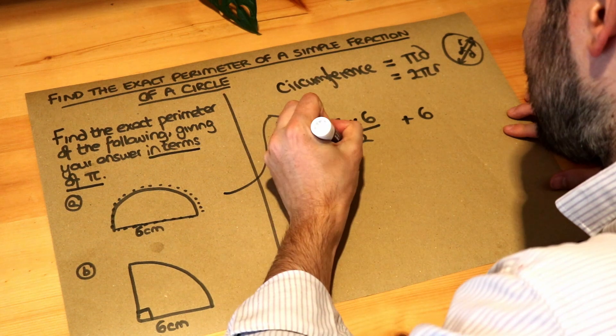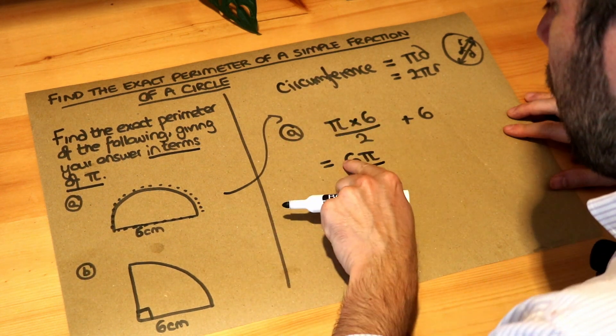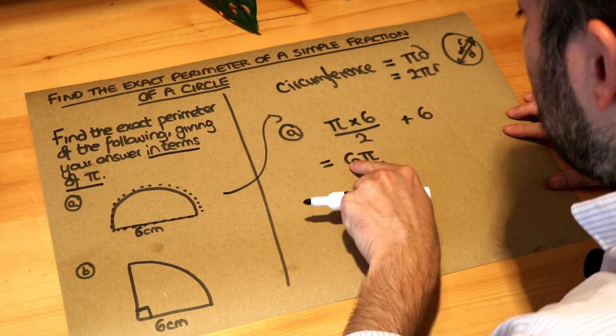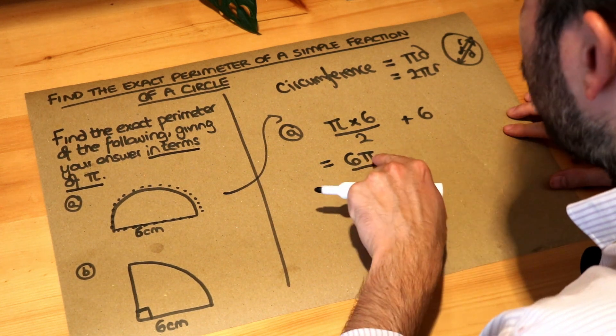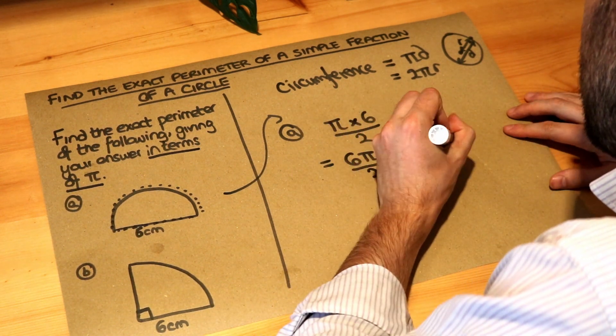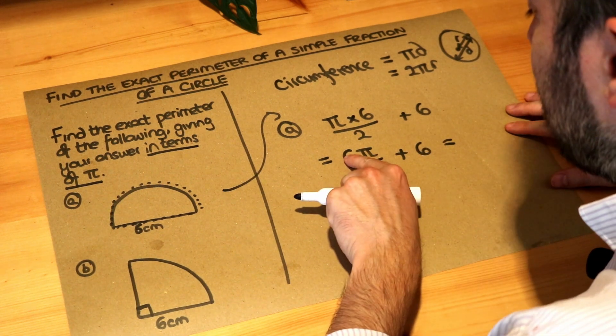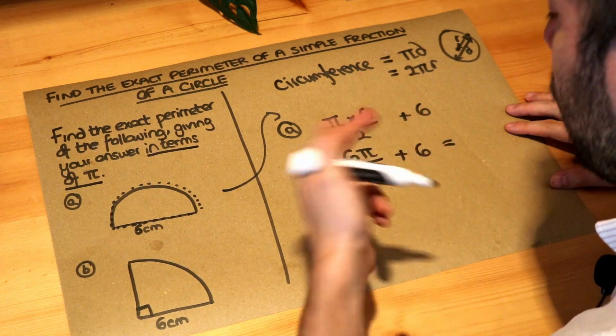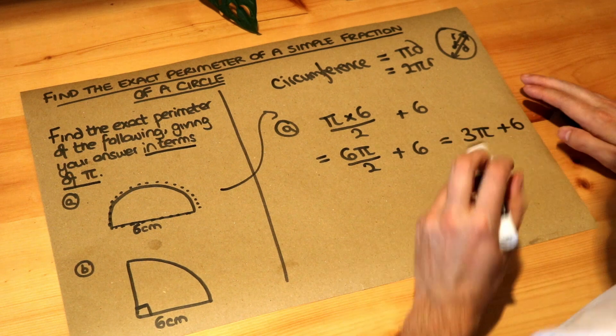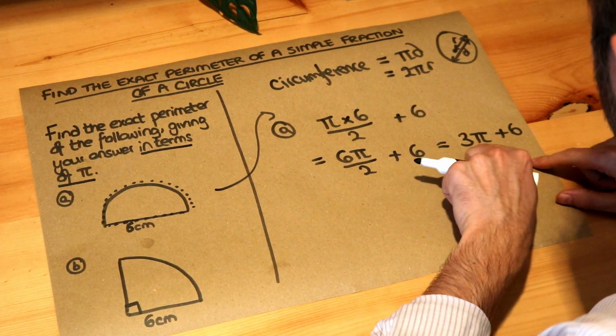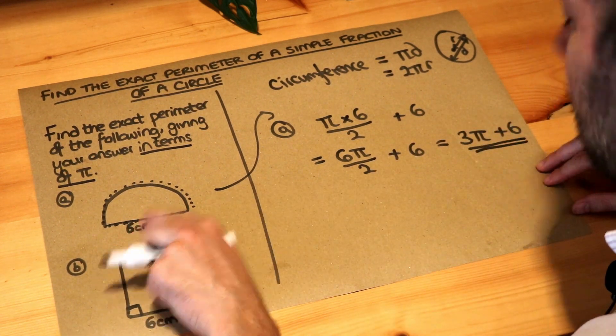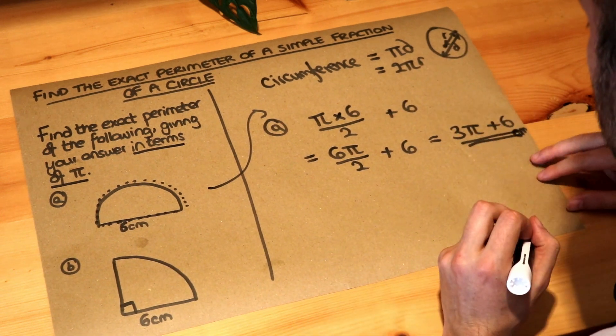So let's just simplify that now. Well, pi times 6, we write as 6 pi. Remember, we put the number before the pi. So we have some lot of pi, like 6 pi, 10 pi. This means 6 lots of pi. We don't write pi 6. We always put the number before the pi. And we're dividing that by 2, and we've still got that plus 6. Now, if we have 6 lots of pi and we divide it by 2, we'll now have 3 lots of pi. Half of 6 is 3, so we have 3 pi, and we've still got this plus 6. Now, we can't simplify that any further. This is a pi term. This is not a pi term. You can't combine those together. So that is the final answer. And that is in centimetres, so I should really have put the unit there of centimetres on the end.